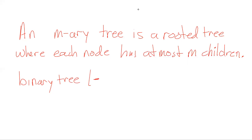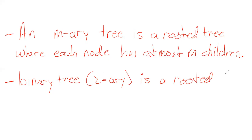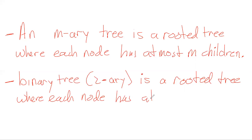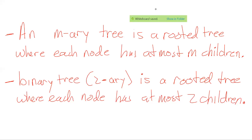A special case is the binary tree — also called a 2-ary tree — which is a rooted tree where each node has at most two children. Binary trees are used quite a bit in computer science, as are M-ary trees in general. Here's an example of a 3-ary tree, where each node has at most three children.